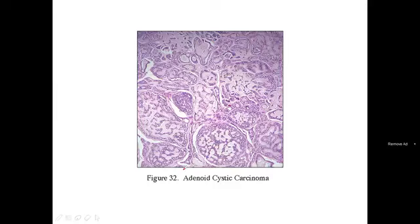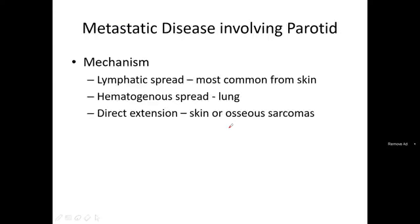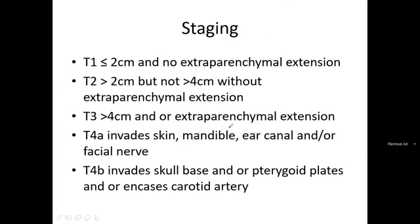Histologically, adenoid cystic carcinoma shows a cystic appearance with multiple lobules. Regarding metastatic disease involving the parotid gland: lung carcinoma (bronchogenic) spreads via hematogenous spread, skin cancers spread via lymphatics, and nearby structures like skull bone can directly extend to the parotid gland.